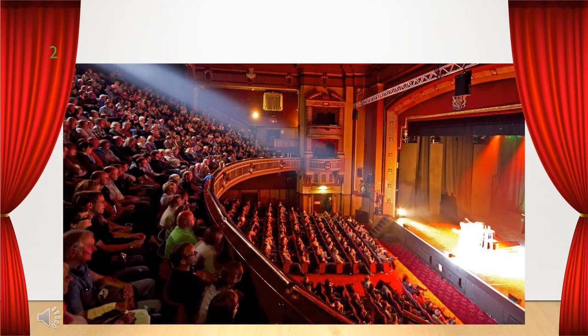Every performance space has two main areas: the area where the performance happens and the area where the audience sits. The audience seating area is actually called the house. Think of it as a place that the audience lives while watching the performance, just like you might live in your house.